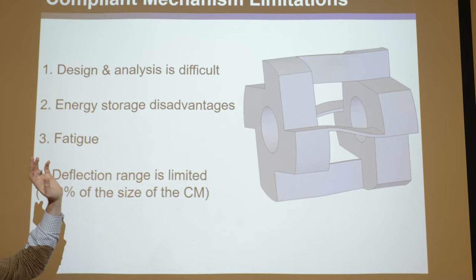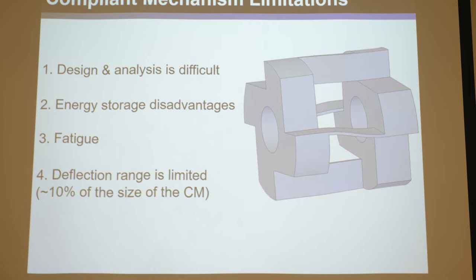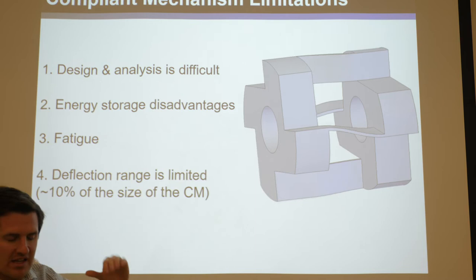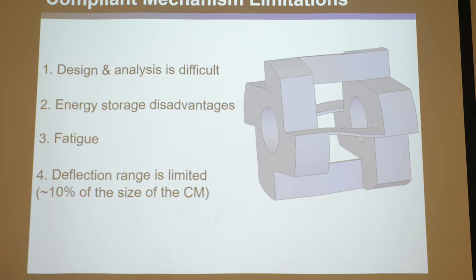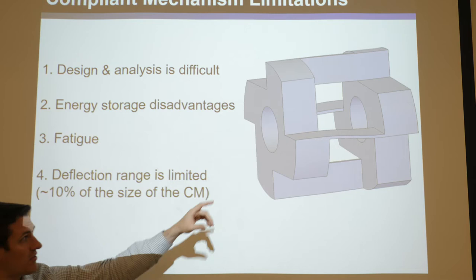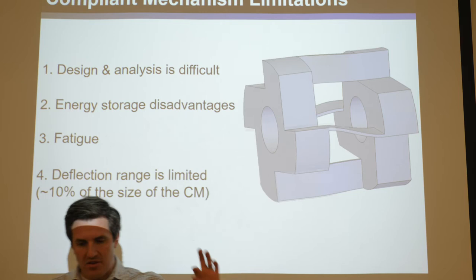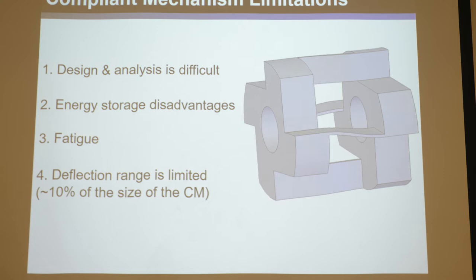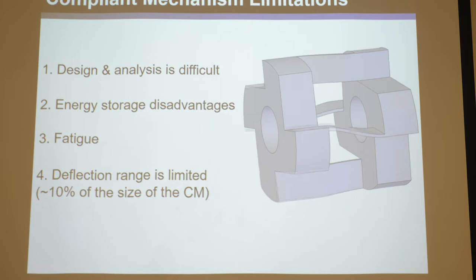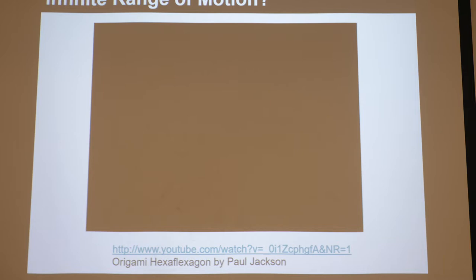Larry Howell reported limited range as one of the main downsides, saying there's no getting over it - limited range is compliant mechanisms' biggest disadvantage. But then someone showed him there actually is a way to overcome this. There are many ways to improve the range: you can stack things in series and nest them inside each other so it takes up the same size but gets double the range, or make the blades much thinner so for the same force you can deform much further without yielding. But Larry said there's no way to get infinite range - and then someone kind of proved him wrong.